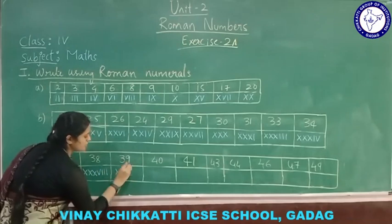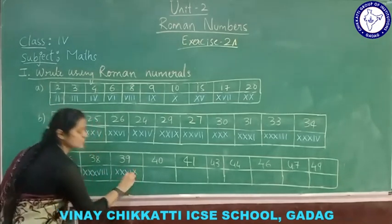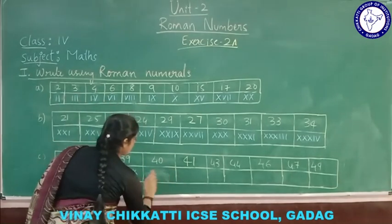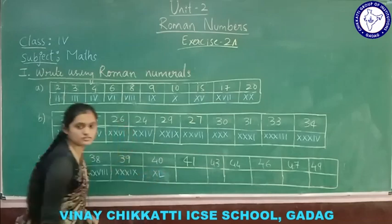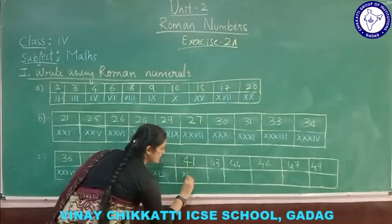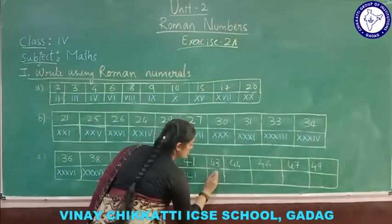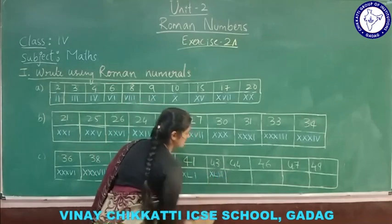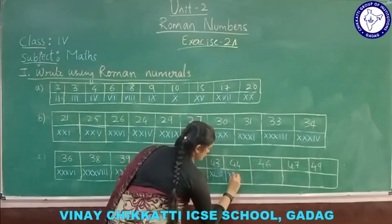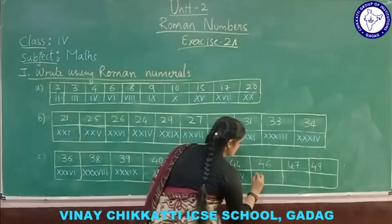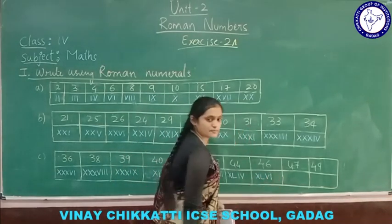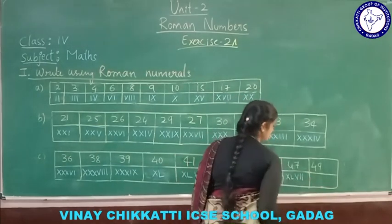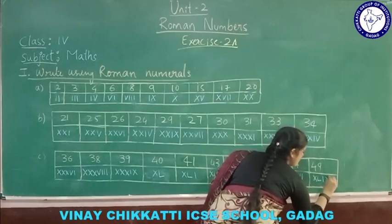39 is X X X I X — three X and then 10 minus 1 gives 9. 40 is X L. 41 is X L I. 43 is X L I I I. 44 is X L I V. 46 is X L V I. 47 is X L V I I. 49 is X L I X.